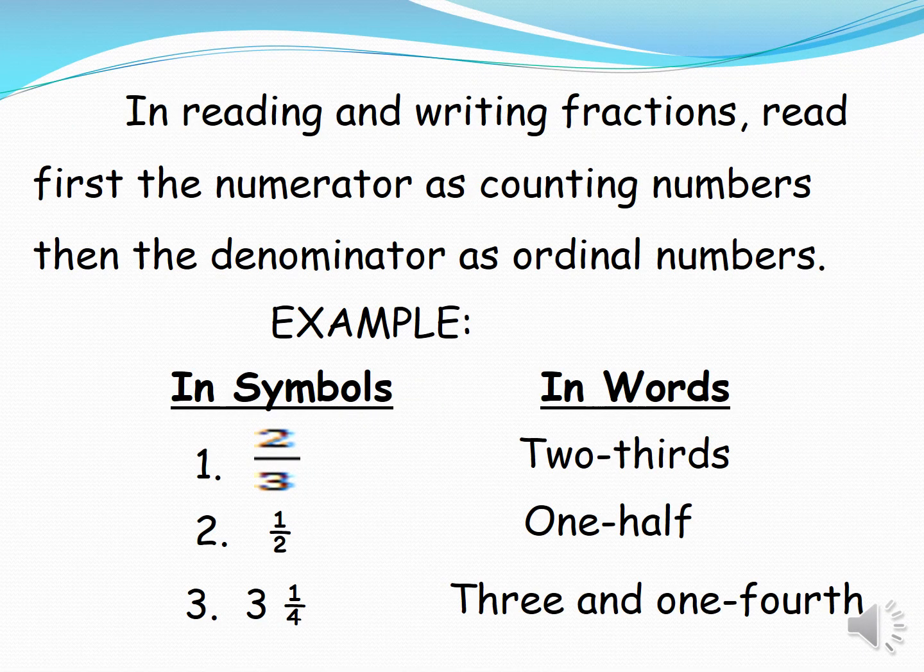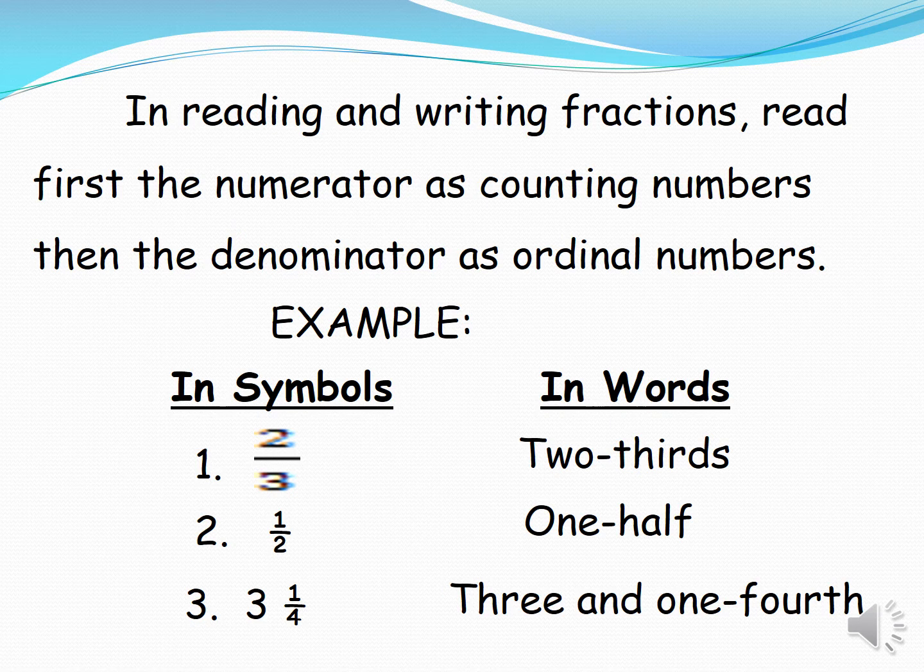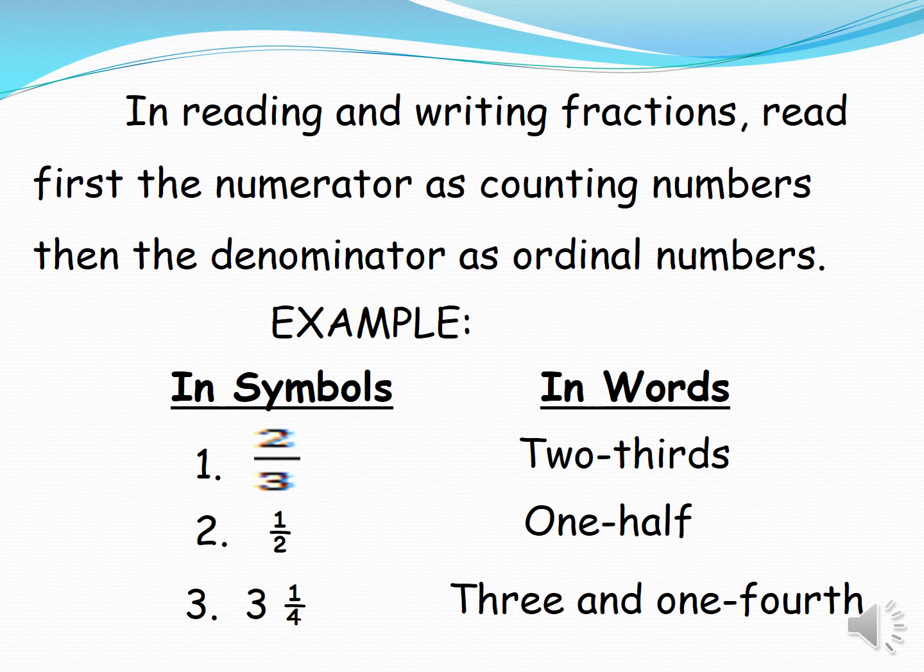In reading and writing fractions, read first the numerator as counting numbers, then the denominator as ordinal numbers. Examples: In symbols, two-thirds; in words, two-thirds. Second, one-half. Third, three and one-fourth. That is how to read and write fractions in symbols and in words.